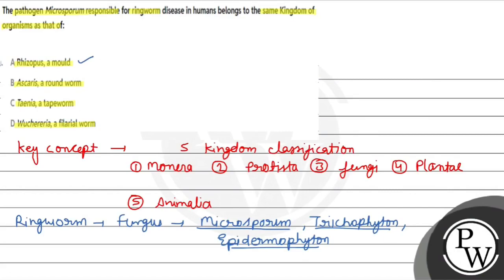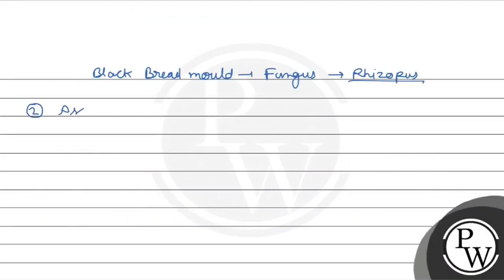But Ascaris, it's a roundworm. And where does it belong? Ascaris, what is it? It's kingdom Animalia. You can see it specifically, it's a phylum Nematoda.